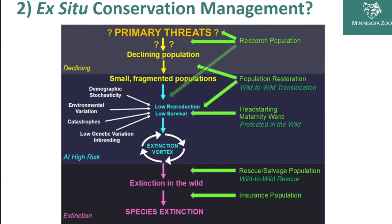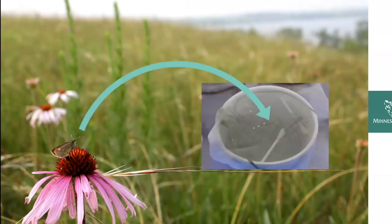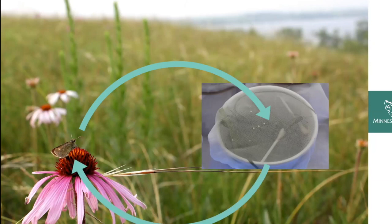One thing we do at the Minnesota Zoo is create an insurance population to save genetics in case of further declines. Under very strict protocols that cause no harm to wild populations, we might collect a female Dakota skipper, hold her for a couple days, collect her eggs — those little white dots in the cup — then release her back where we found her so she can continue laying in the wild. Those eggs are brought back to the zoo where we rear them up into a new population.